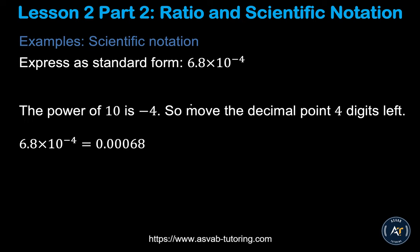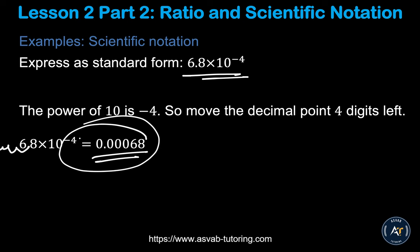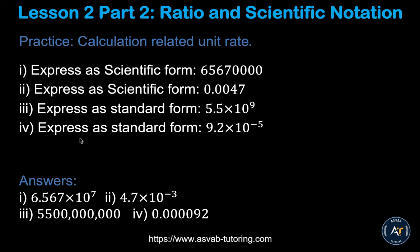Here's another example to try yourself: 6.4 times 10 to the negative 4. Move the decimal four places — one, two, three, four — and fill with zeros. Pause the video and try the practice problems to make sure you understand and get the correct answers.